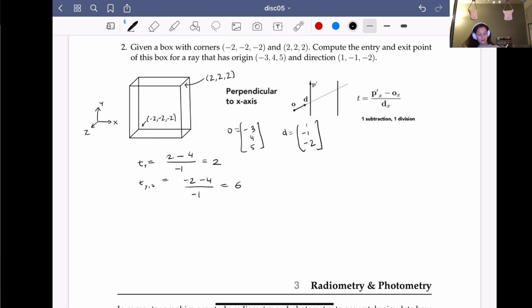And then we'll just repeat the process for the other slabs. So let's do it with the z slab. We'll take pz, let's start with positive 2. Oz, that's 5. Sorry, this is minus 5, divided by negative 2. That will give us 3 over 2. And then we'll do the same computation with the negative corner. So negative 2 minus 5, divided by negative 2. That's going to give us 7 over 2.